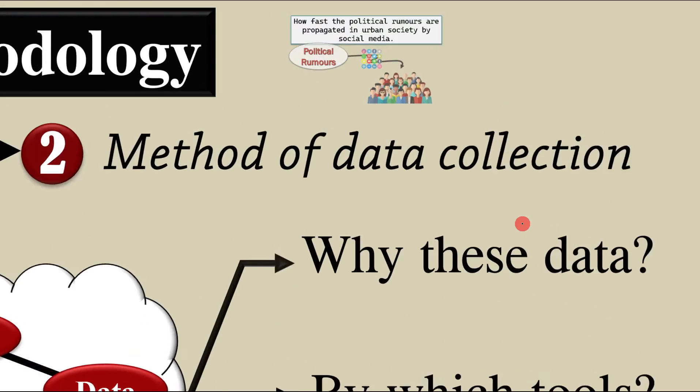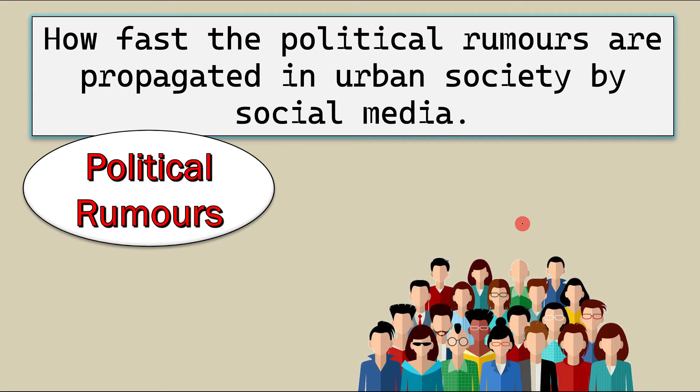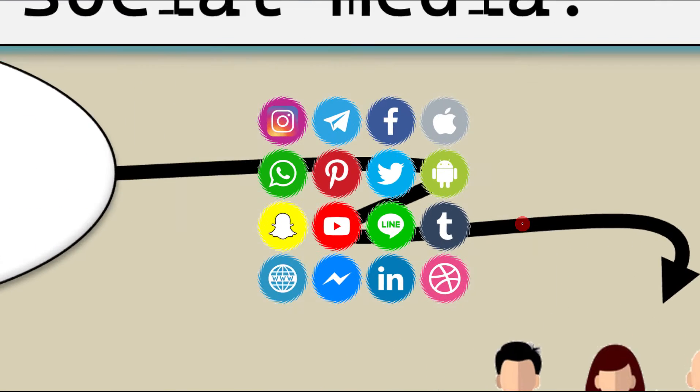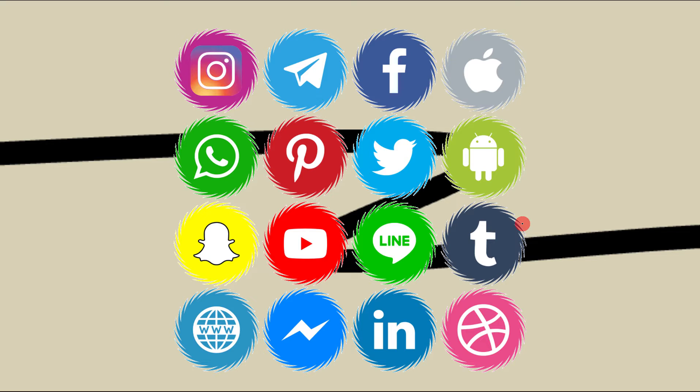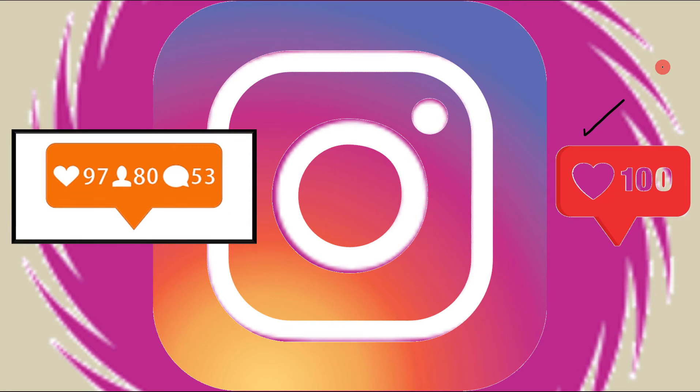Let's consider an example to make it clear. Suppose that this is a research question from an extended essay. How fast the political rumors are propagated in urban society by social media? Here I have political rumors and urban society. And I am considering how social media can affect the propagation of those political rumors among your society. You know that in extended essay, we have to be very focused. So among all the social media, we have to concentrate on one of them. Suppose that I concentrate on Instagram. Here I have something more to do. For instance, tell the reader that you have just counted the number of likes from a couple of weeks ago till now. Or no, number of likes, number of subscriptions, and number of comments. It's very important.